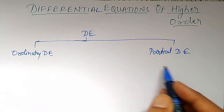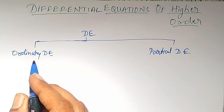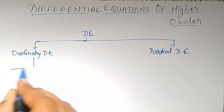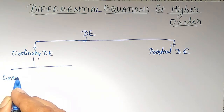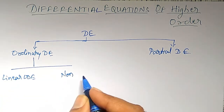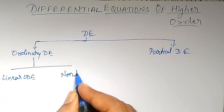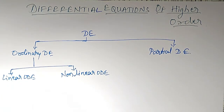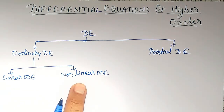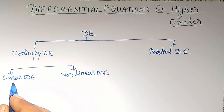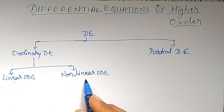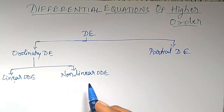Partial differential equations we will discuss in the next module. Now, in ordinary differential equations, a few types were already discussed. ODE is divided into two types: linear ODE and nonlinear ODE. Linear means degree 1 — a differential equation containing only degree 1 is known as a linear differential equation. A differential equation with degree more than 1 is known as a nonlinear differential equation.